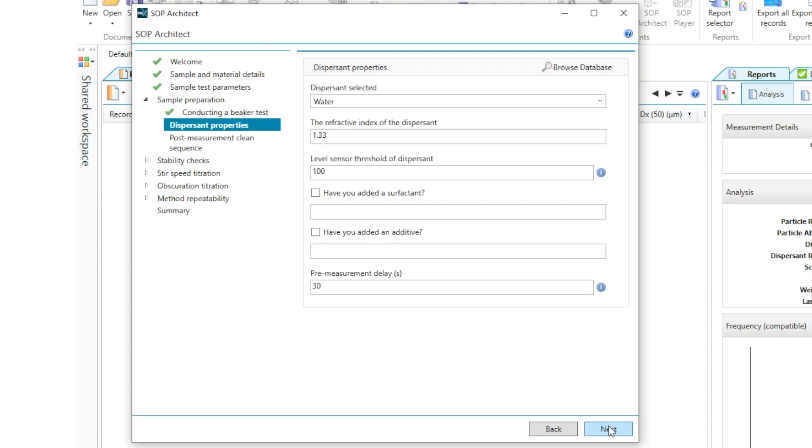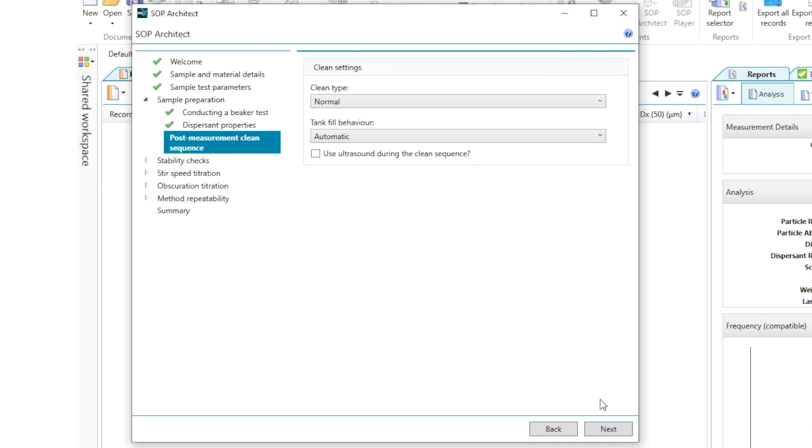As well as other options such as selecting the dispersant that we're going to be measuring. So as I've said we'll be measuring in water and we've got the refractive index input here and we also have the option of selecting the cleaning steps that we would like to perform after the measurements are carried out.